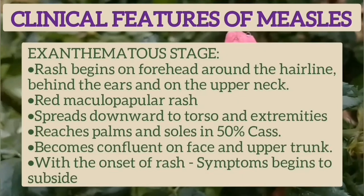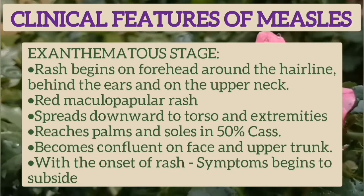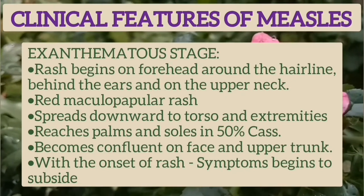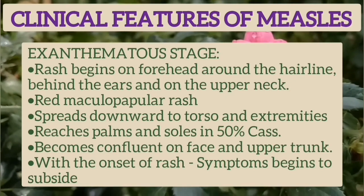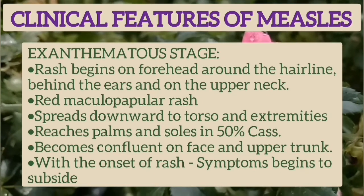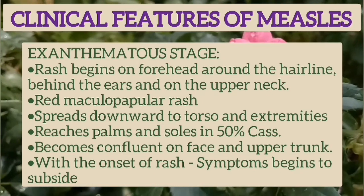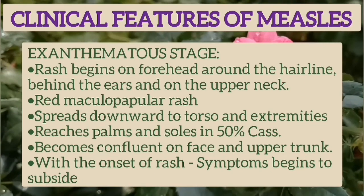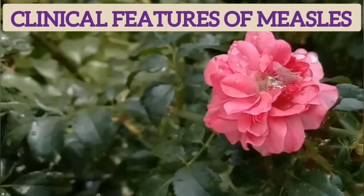In the third, exanthematous stage, the rash begins on the forehead, around the hairline, behind the ears, and on the upper neck. It is a red maculopapular rash and spreads downward to the torso and extremities, reaching the palms and soles in about 50% of cases. It can become confluent on the face and upper trunk. With the onset of rash, symptoms begin to subside.